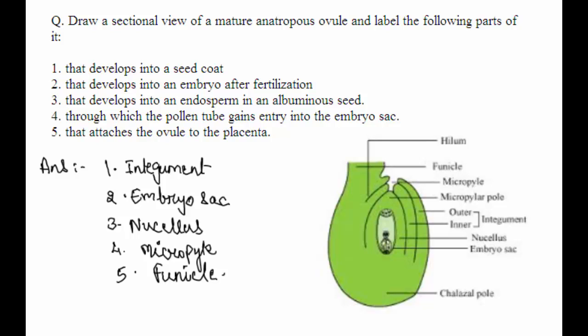Draw a sectional view of a mature anatropous ovule and label the following parts: the part that develops into a seed coat, that develops into an embryo after fertilization, that develops into an endosperm in an albuminous seed through which the pollen tube gains entry into the embryo sac, and that attaches the ovule to the placenta.